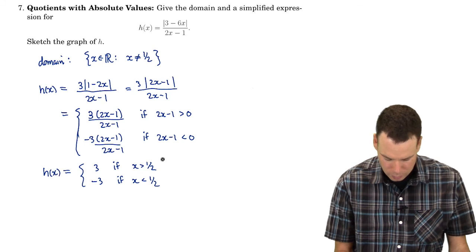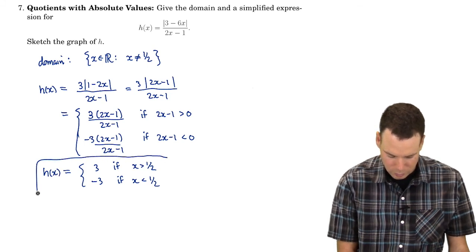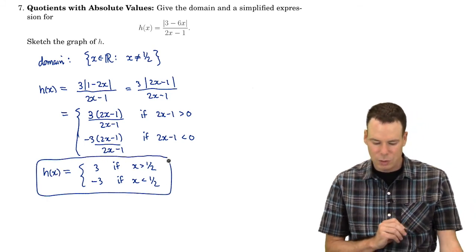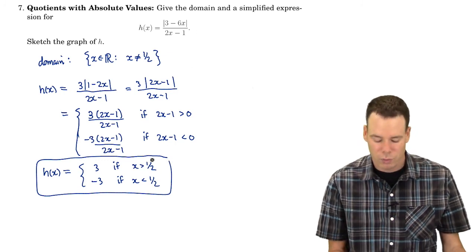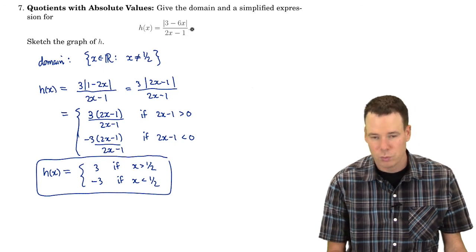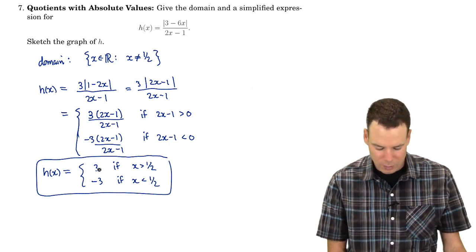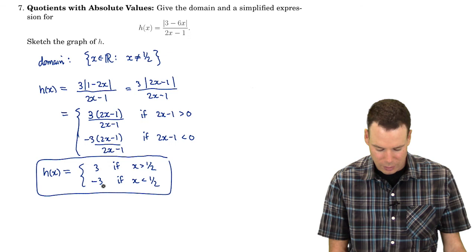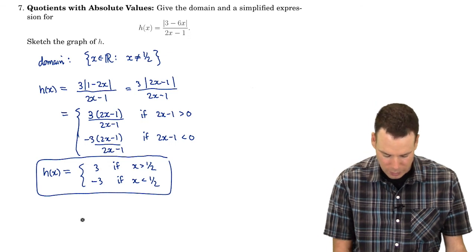And wow that is a simplified version of the function because it's so much easier to work out values of the function when it's expressed this way than when it was expressed in its original form. We see that the only values that it takes on are either 3 or negative 3 depending on which side of a half it's on.